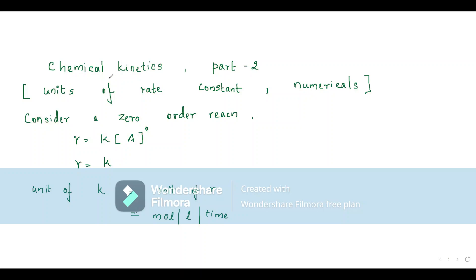Hello everyone. Welcome back to Tales of Chemistry. Today we are continuing with chemical kinetics. In the last episode, you understood what is the meaning of chemical kinetics, what do we understand by the rate of a reaction, the difference between instantaneous and average rate, the difference between experimental and theoretical rate of a reaction, then order of a reaction as well as the rate constant. In today's episode, we are learning the units of rate constant and some numericals based on order of a reaction and finding out the rate law.